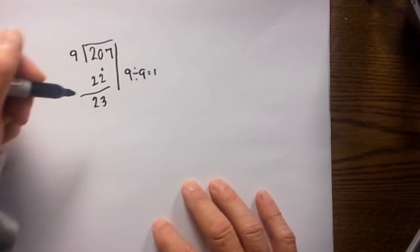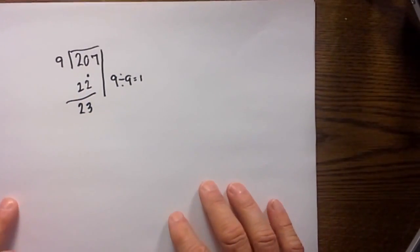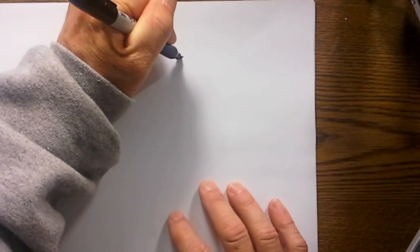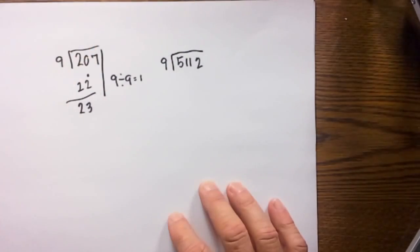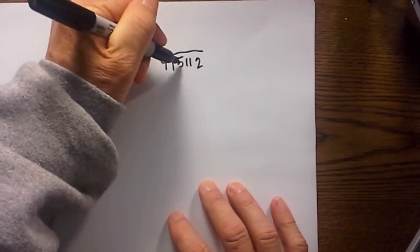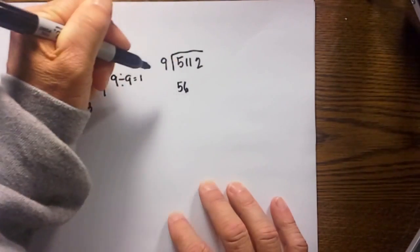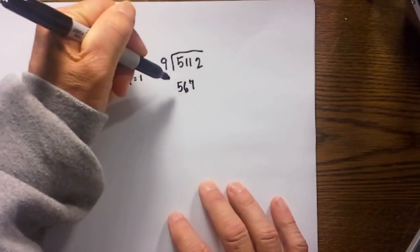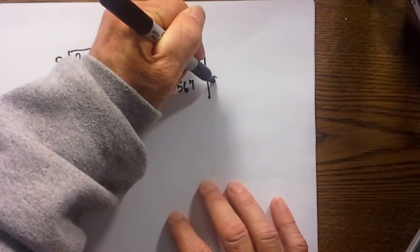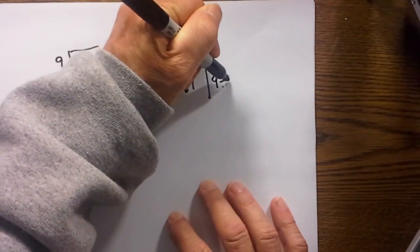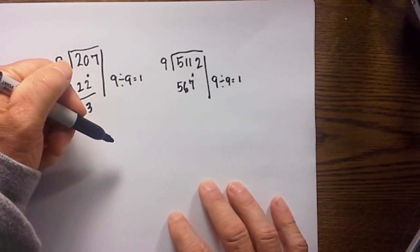Pretty simple. Let's go with another fairly easy one. We have 5,112 divided by 9. Let's practice the same technique. Bring the 5 down, 5 plus 1 is 6, 6 plus 1 is 7. Since this is the last digit I will draw a line. 7 plus 2 is 9, 9 divided by 9 equals 1, so I will place the 1 here.